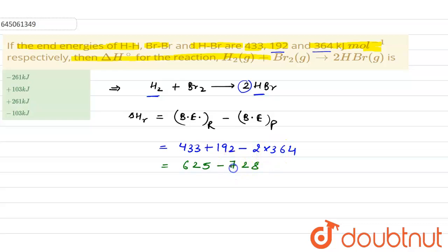From here we will get minus 103 kilojoules. So this is the bond energy or enthalpy change for the given reaction. Our answer is the fourth option. Thank you so much.